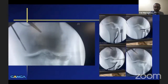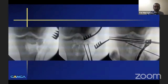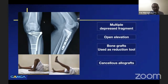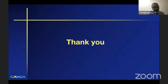Once elevated, there is a large void. We generally use cancellous allograft as a reduction tool to prevent collapse of the elevated surfaces before applying the plate. For multiple depressed fragments, we prefer cancellous allograft over synthetic bone grafts because it can be impacted and holds the reduction, whereas synthetic allografts such as calcium phosphate cement or hydroxyapatite crystals mainly act as void fillers. Thank you.